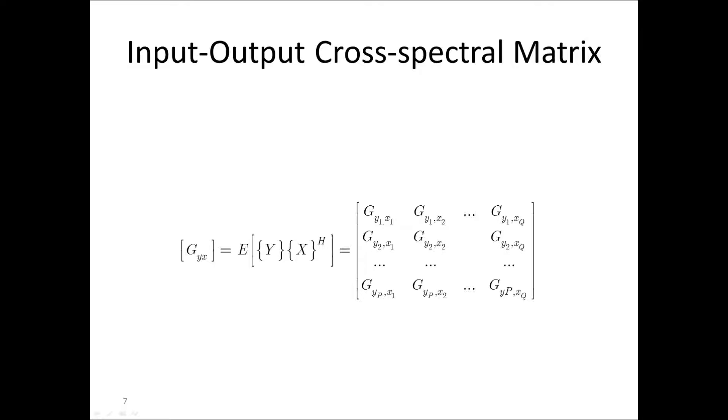We can also define the input-output cross-spectral matrix Gyx between the inputs x and the outputs y. Each row of this matrix contains the cross-spectral densities between a single output and all the inputs.